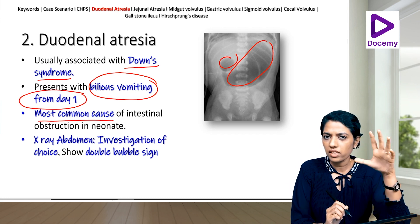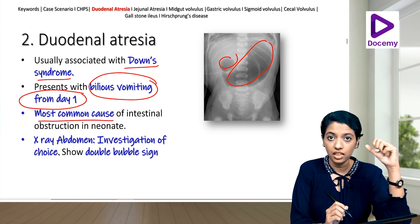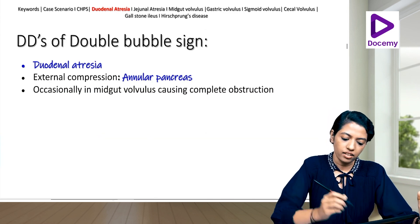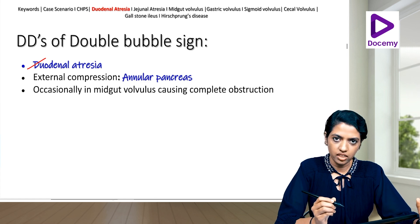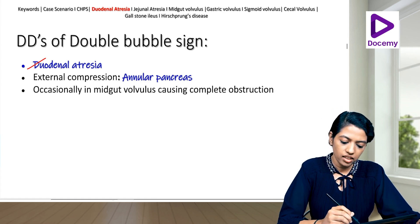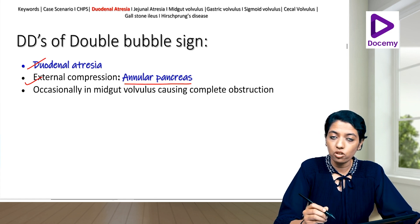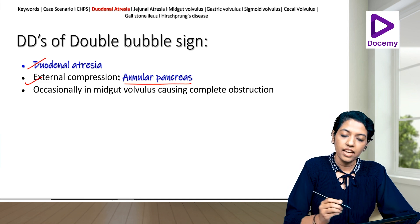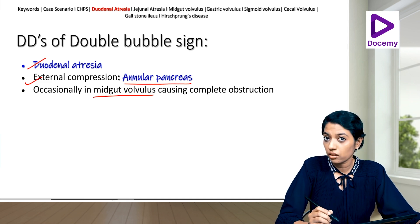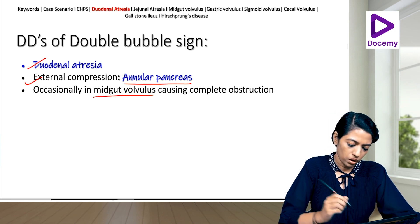Is the double bubble sign specific for duodenal atresia? No — the differentials include duodenal atresia (most common in neonates), external compression such as annular pancreas, and occasionally midgut volvulus when it causes complete obstruction.